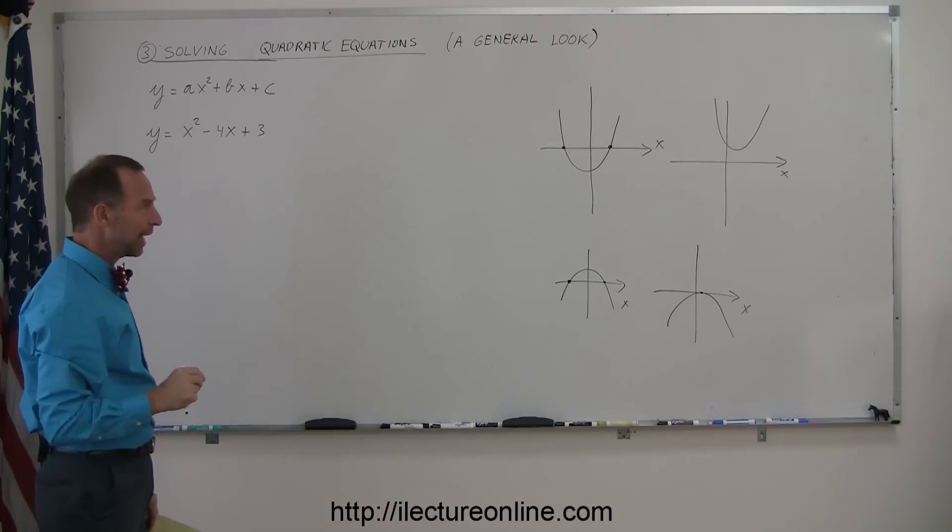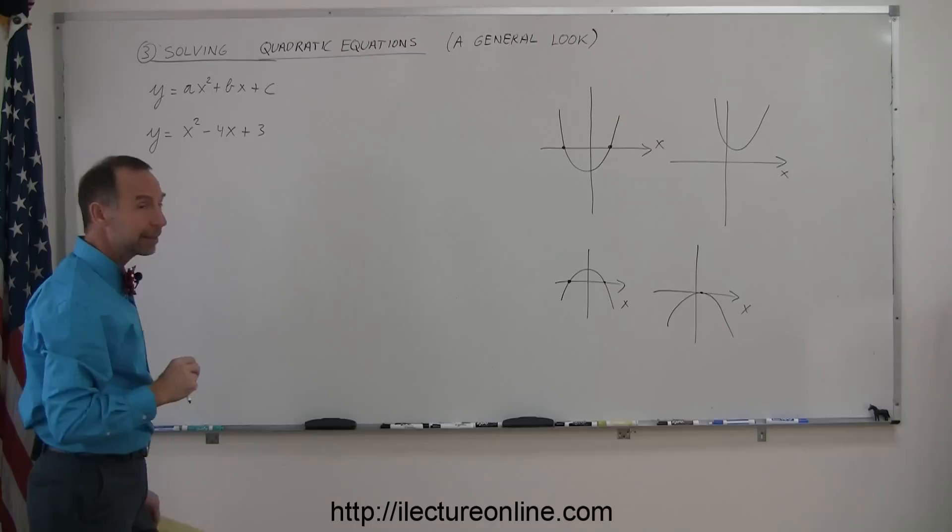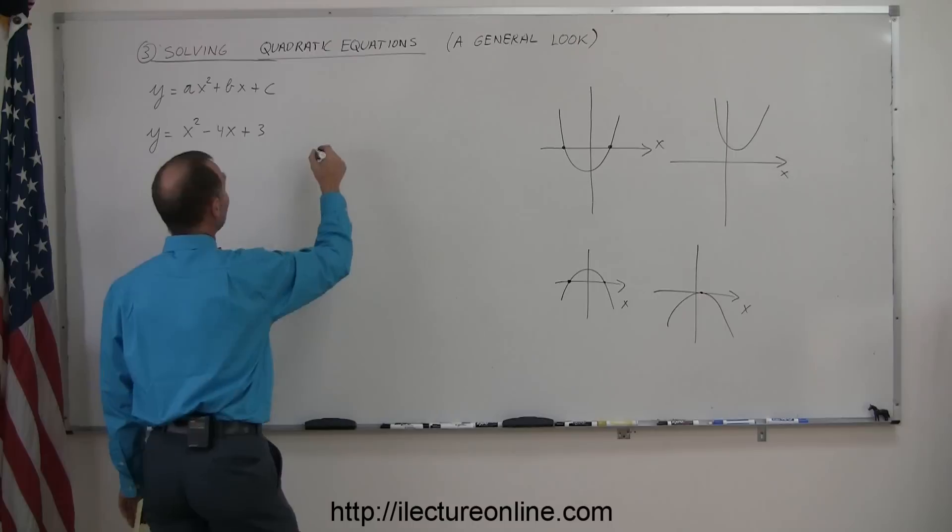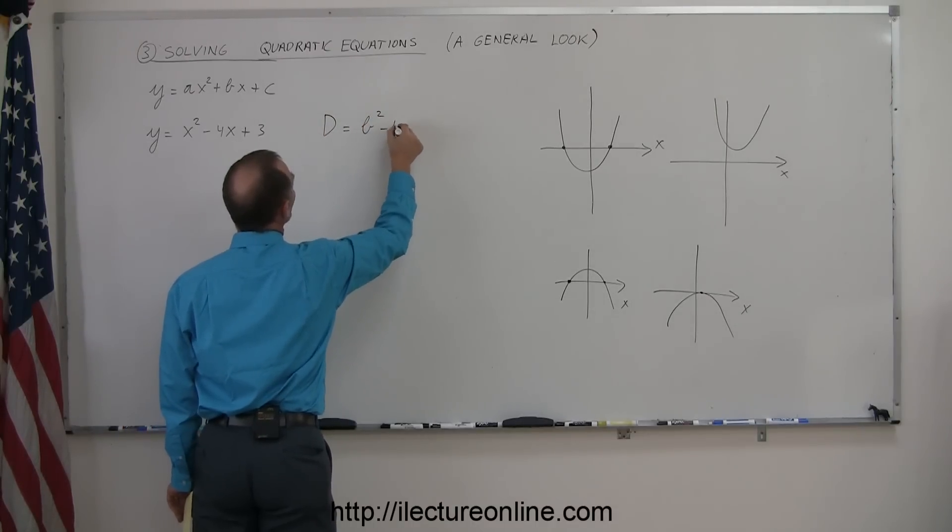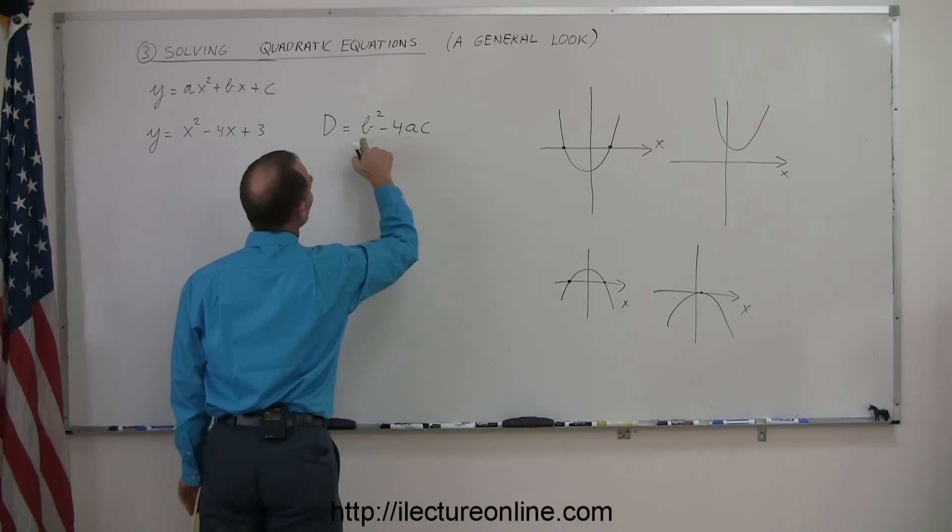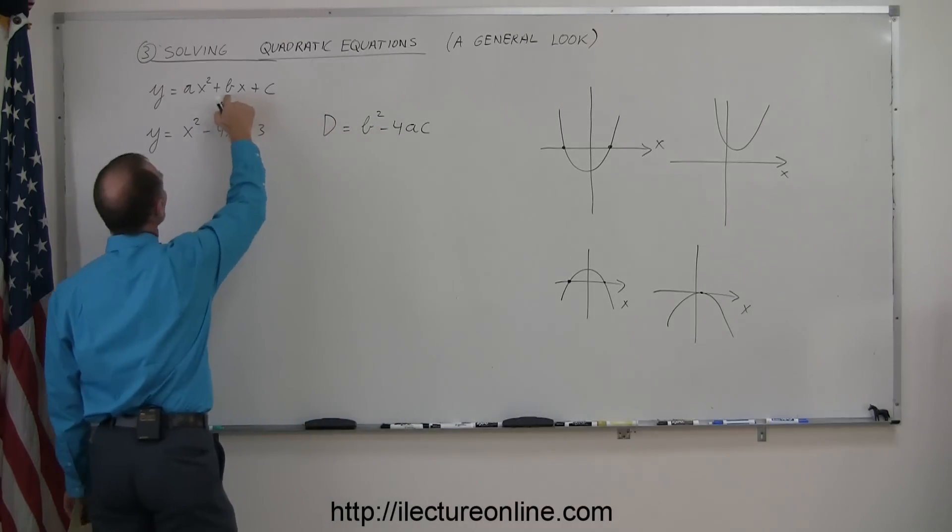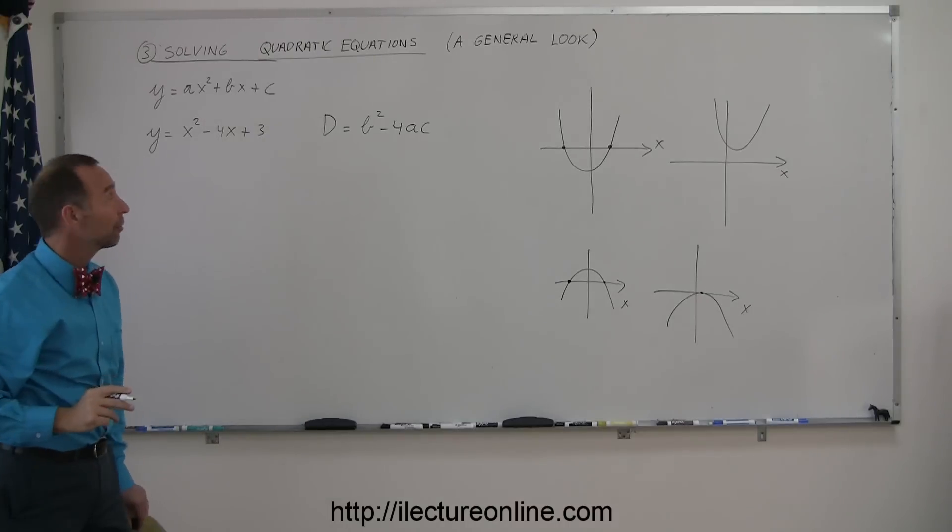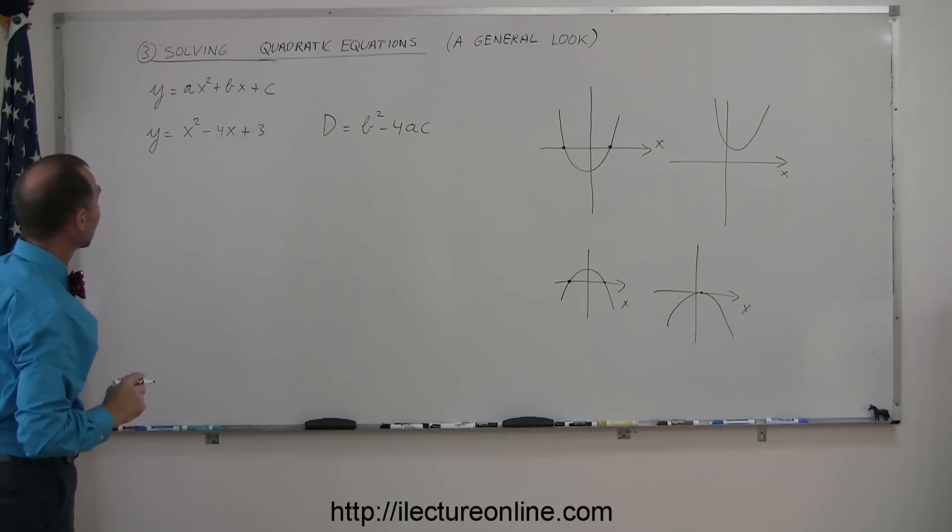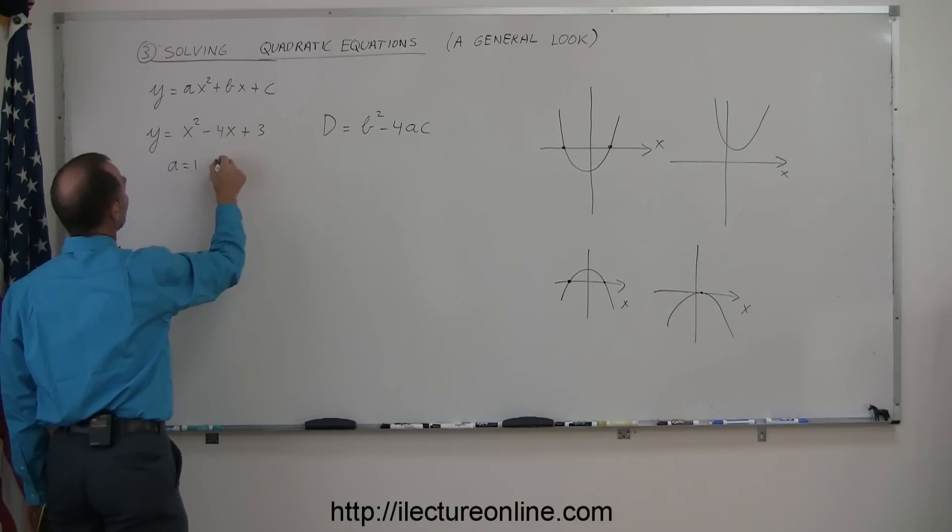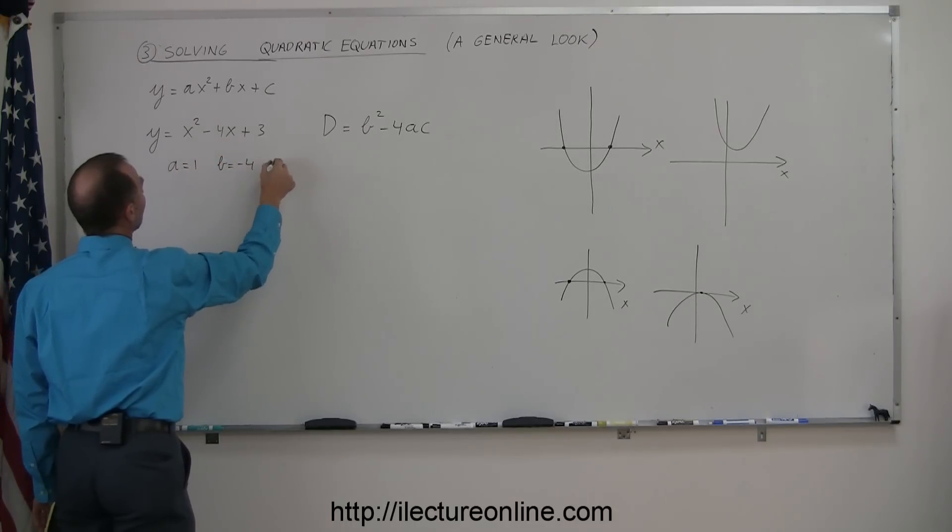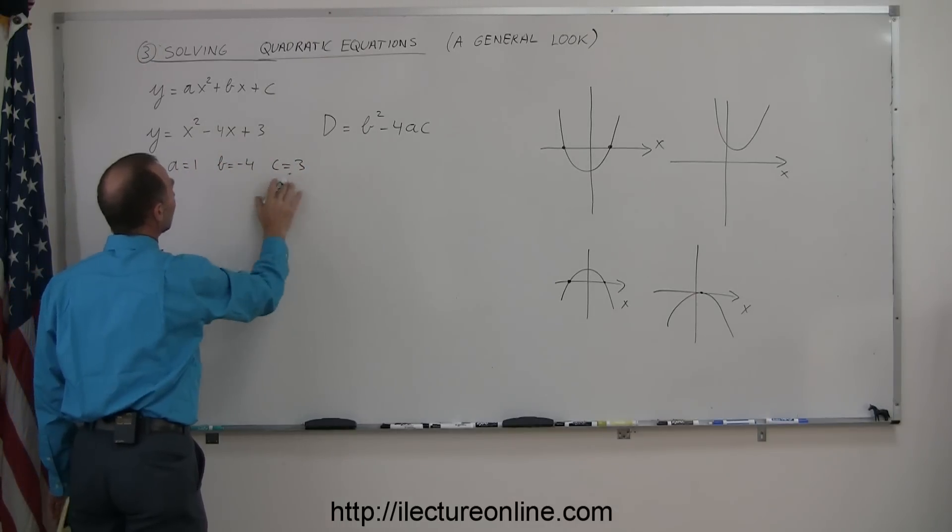Well, one way to figure out if it has roots at all is by calculating what we call the determinant. And by definition, the determinant is equal to b squared minus 4ac. Now b, a, and c are the coefficients of the different terms in your quadratic equation. In this case, a is equal to 1, b is equal to negative 4, and c is equal to 3.